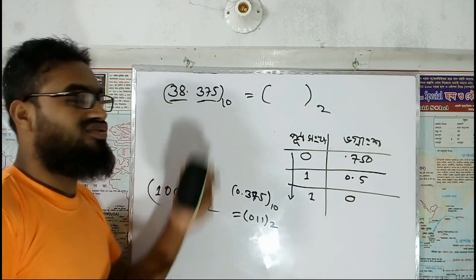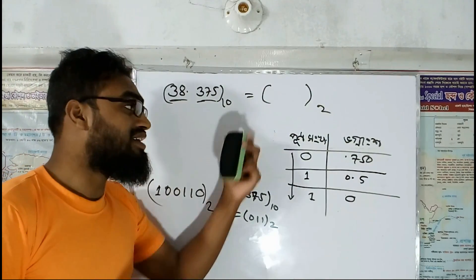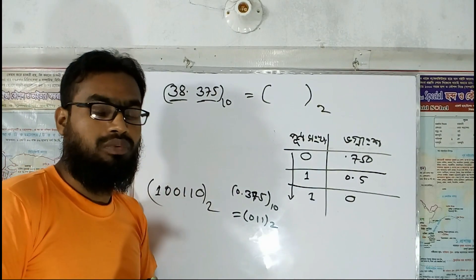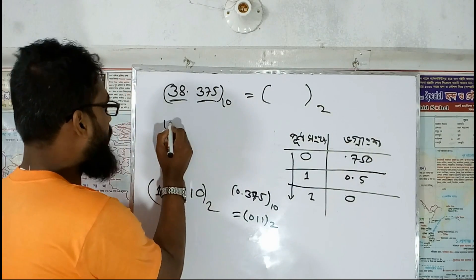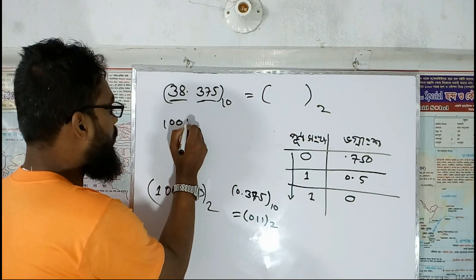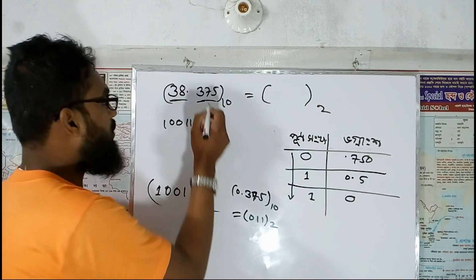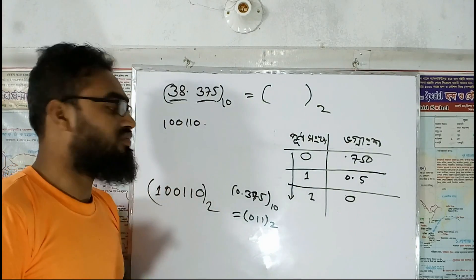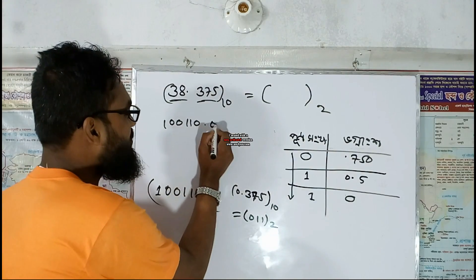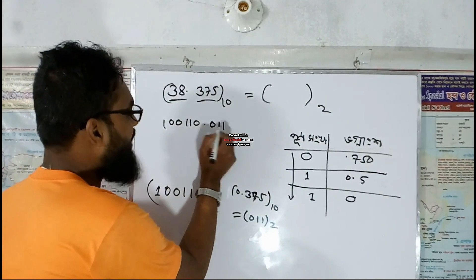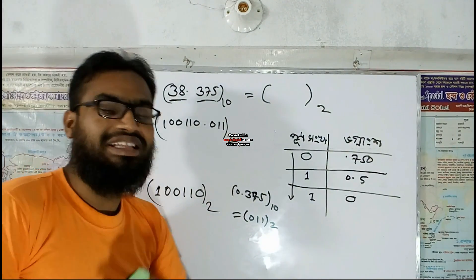So, for 38.375 decimal, joining both parts together, we get from the integer part: 1 0 0 1 1 0. And from 0.375 we are getting here 0 1 1. That means the full binary representation is 100110.011.